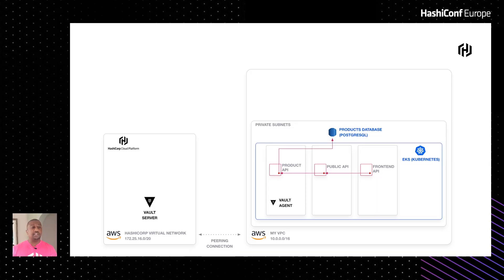In some cases, secrets engines can also be used for storing static secrets, but that's not the use case we're discussing today. You can think of Vault as an identity broker. Going back to our application architecture, we can start to add these building blocks in to see how this works.